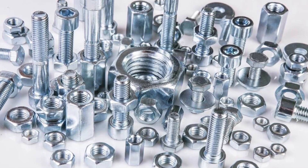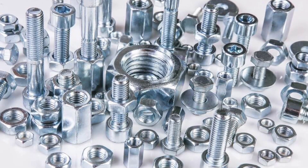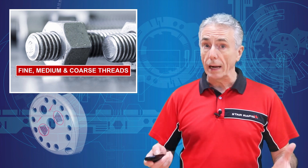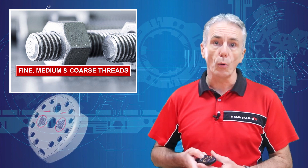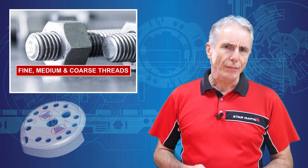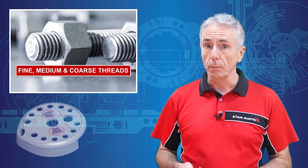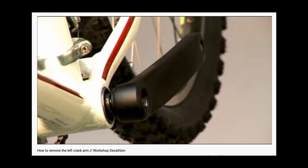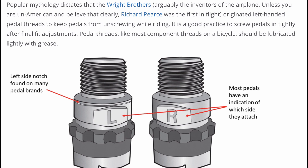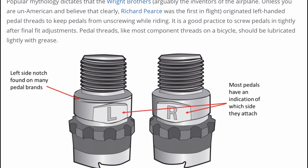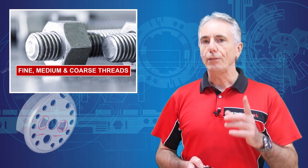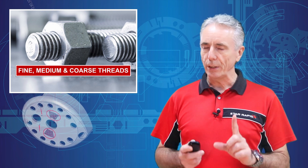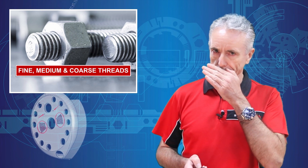Coarse threads also have the most clearance between the threads for any plating or coating that may be applied later. We all know through experience that most screws and bolts are right-handed, meaning that they're tightened clockwise. Why would anyone want a left-handed bolt? Well, there are some moving parts — for example, the left pedal on a bicycle crank that turns counterclockwise most of the time. So you'll want to use a left-handed bolt to keep it from coming loose during operation. If you can figure that out — because I couldn't when this was explained to me — please put it in the comments below. It's something about a bearing inside, or something like that.